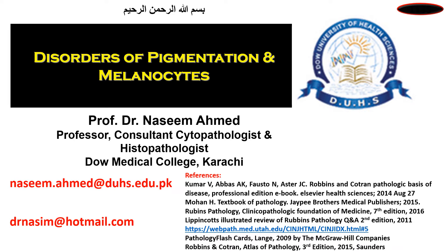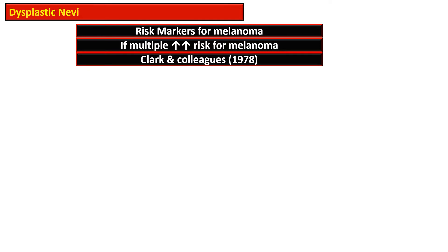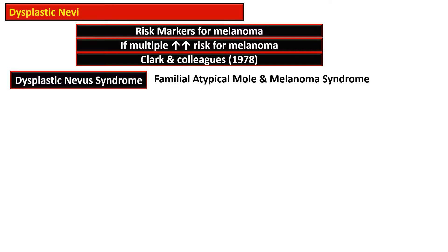Dysplastic nevi are considered as risk markers for melanoma, and if the number of these dysplastic nevi is more, the risk for the development of melanoma increases manifold. This lesion was described many centuries ago, but in 1978 Clark and his fellow scientists described a lesion later known as dysplastic nevus. This lesion was first identified in families of melanoma patients, and it is considered that dysplastic nevi are precursors of melanoma. One association is dysplastic nevus syndrome.